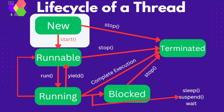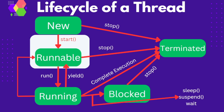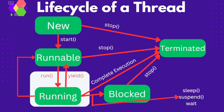When we create a thread object but have not called its start method, at that point the thread is in the new state. Now to make the thread object ready to run, we need to call its start method. Once the start method is called on that object, the state changes from new to runnable or ready. The thread is still not in execution at this point, but now it is eligible to be picked up by the thread scheduler for execution. Depending on the priorities and thread scheduler implementation, a runnable thread will start its execution whenever CPU time is allocated to it.